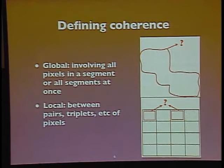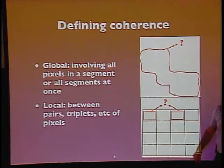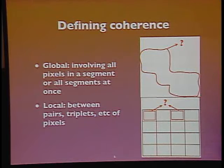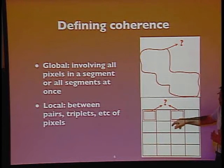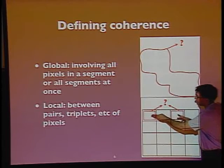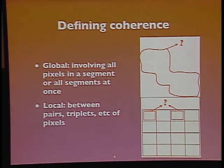There are two broad approaches for codifying what it means to belong in the same category. One is global, where the mathematical entity of interest is a closed contour — a set of closed contours with pixels inside each one belonging together. The other approach codifies coherence by thinking about pairwise decisions: a thumbs-up or thumbs-down on whether a pair of pixels is similar. Predominant approaches take one or the other of these two tacks.